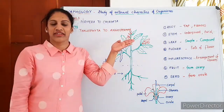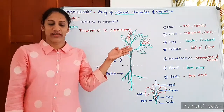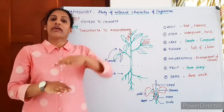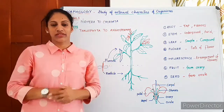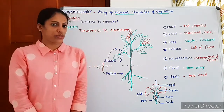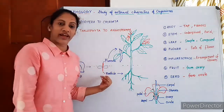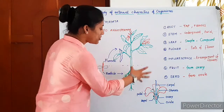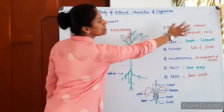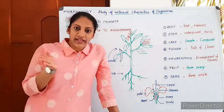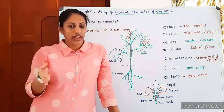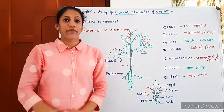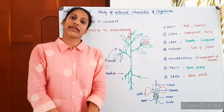The root system develops from the radicle, and the shoot system develops from the plumule. Roots are of different types like tap roots and fibrous roots. Tap roots have a main primary root with secondary and tertiary roots. Fibrous roots are fiber-like roots all over. Monocots have fibrous roots, whereas dicots have tap roots.